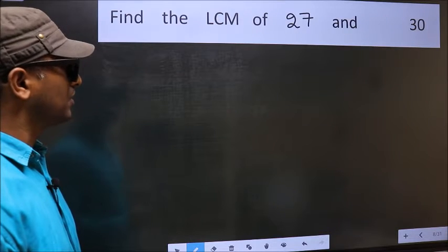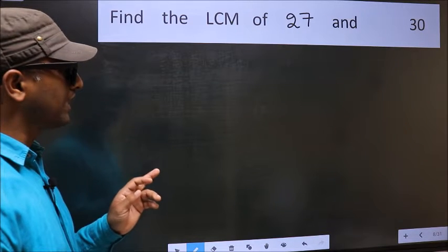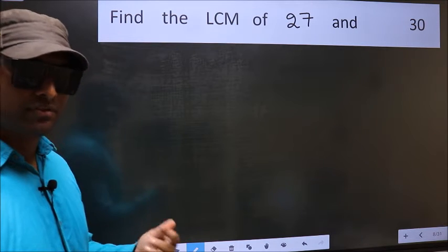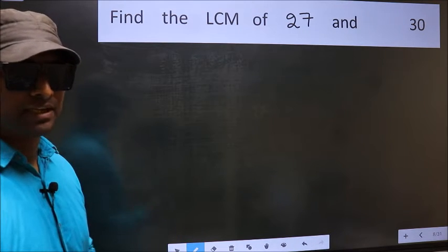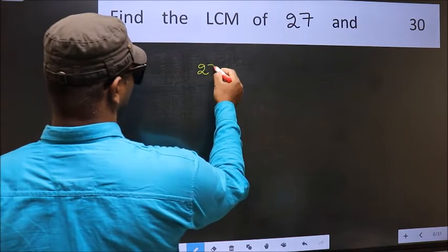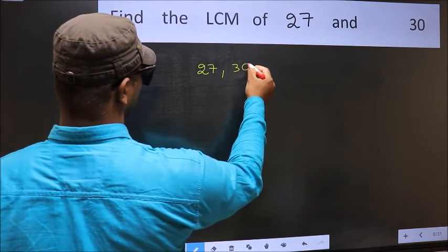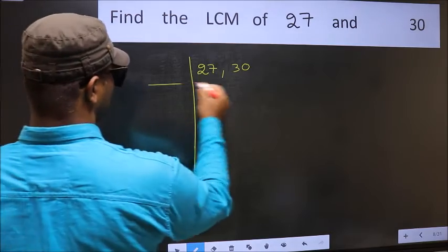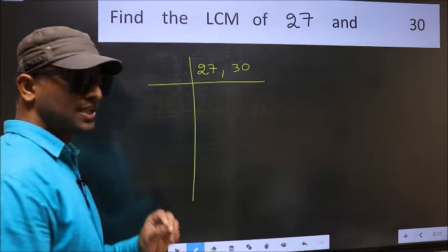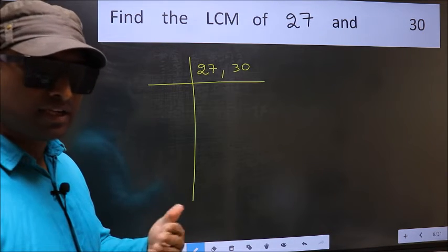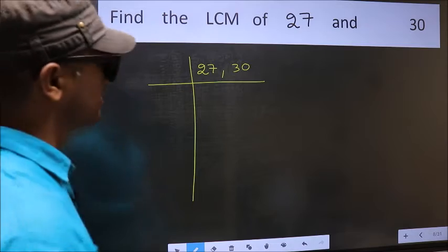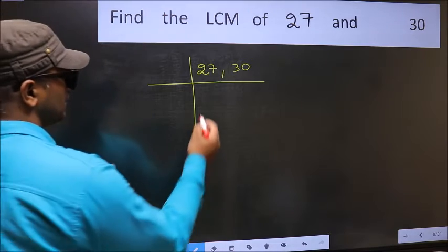Find the LCM of 27 and 30. To find the LCM, we should frame it in this way — writing 27 and 30. This is step 1. Now focus on the first number, which is 27 here.